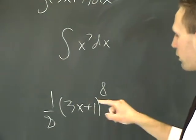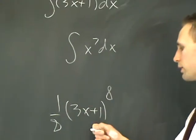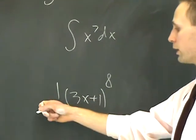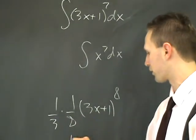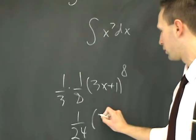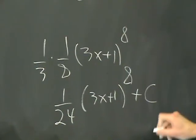But because of the factor of 3 in there, when you go to do the chain rule for differentiating this, it's going to produce an extra 3. So you have to undo that by putting a third out in front of there, and the final answer would be 1 24th, 3x plus 1 to the 8th plus c.